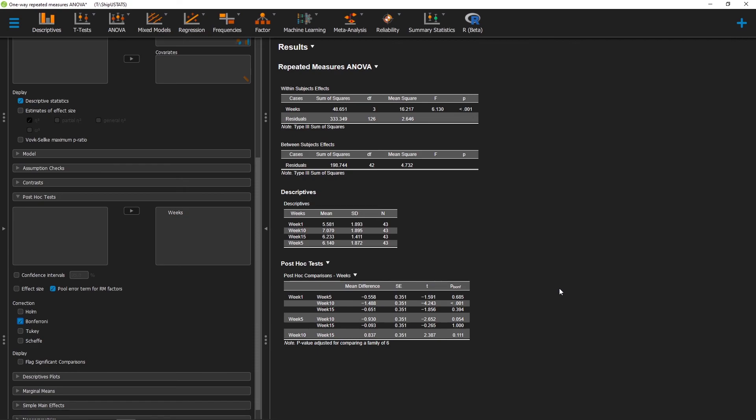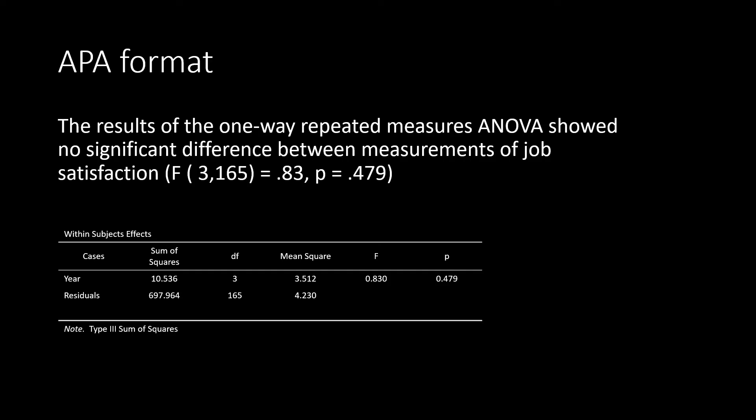Now that we have our results for both examples, let's go ahead and write this up in APA format. In our first example, we found no significant differences in measures of job satisfaction at different points in a person's career. The results of the one-way repeated measures ANOVA showed no significant differences between measurements of job satisfaction. I've entered my F symbol, my degrees of freedom between and within, my F value, and my P value.